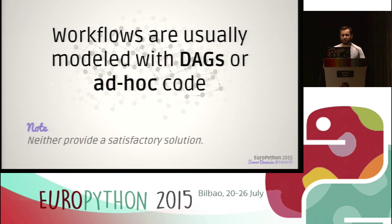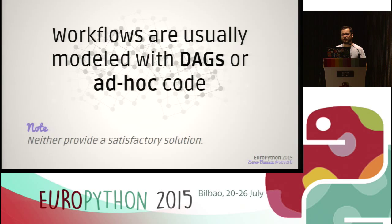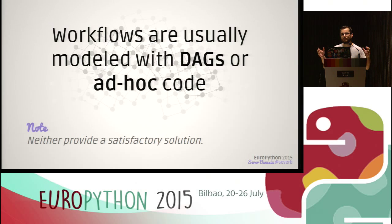Neither of those provide a good solution. DAGs are too rigid — you cannot have dynamic things happening there. The ad hoc approach with a job queue tends to create code that is hard to maintain because the entire workflow logic is spread across all the tasks. Another problem with the ad hoc approach is that it's very hard to synchronize tasks, so if you want a task started only after other tasks are finished, that's usually pretty hard to do.